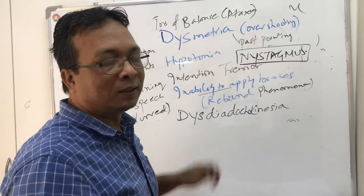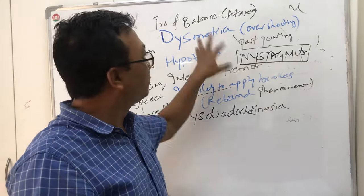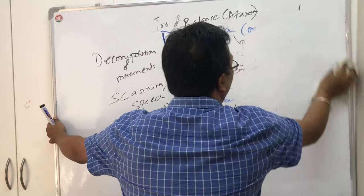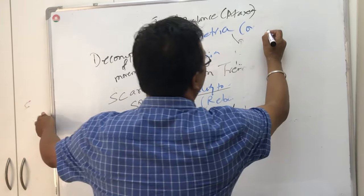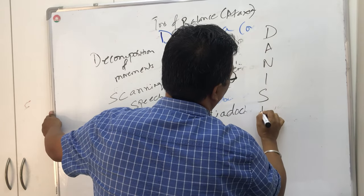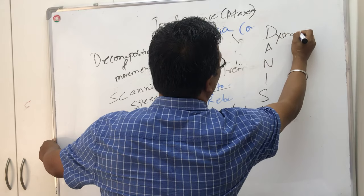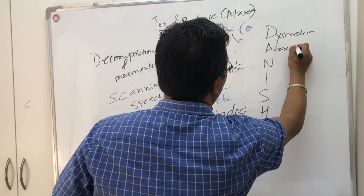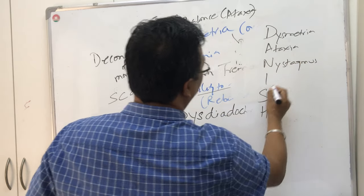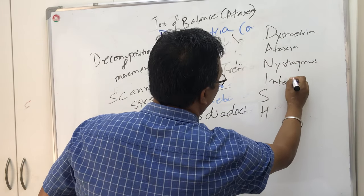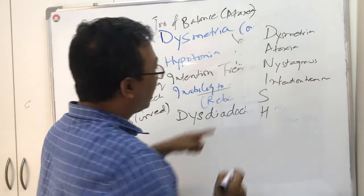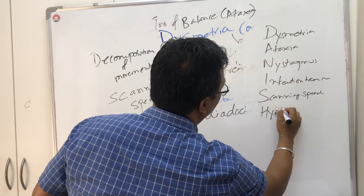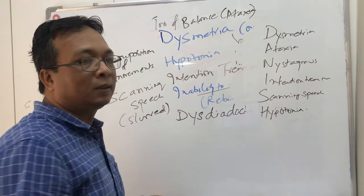The mnemonic to remember cerebellar disorders is DANISH. D for dysmetria (pass pointing, overshooting), A for ataxia, N for nystagmus, I for intention tremor, S for scanning speech, H for hypotonia (decreased tone). So these are the cerebellar disorders summarized by the DANISH mnemonic.